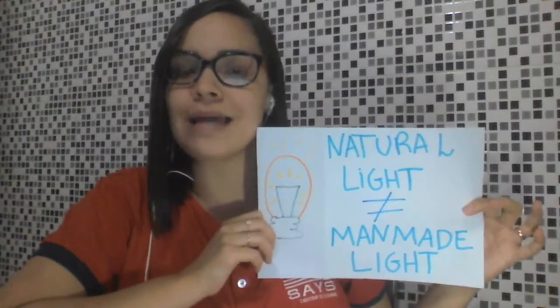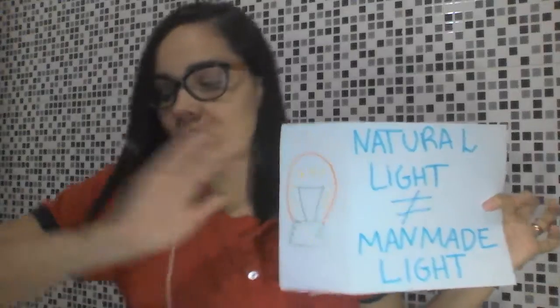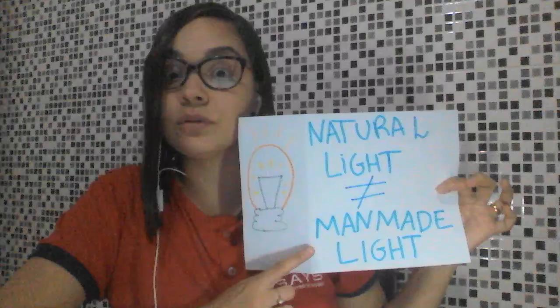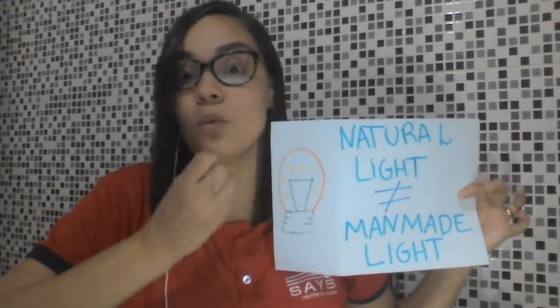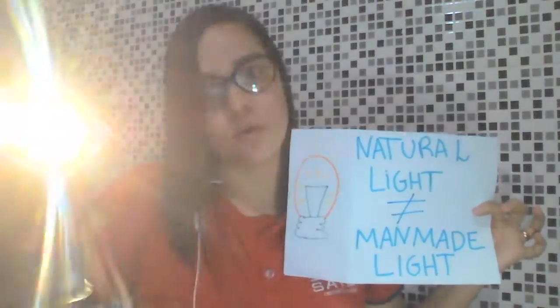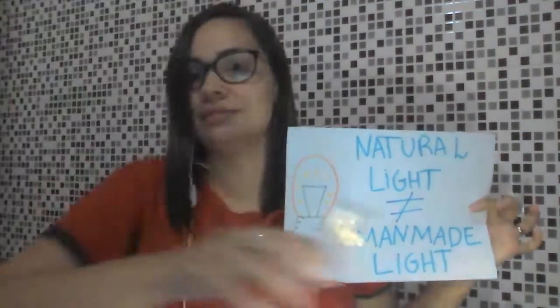Bom dia, família! Boa tarde! Boa noite! Tudo certo com vocês? Na nossa aula de hoje, nós aprendemos sobre light — luz. Natural light, que é a luz natural, que vem da natureza. Dei como exemplo a luz do sol. Man-made light é o tipo de luz que é criado pelo homem. Dei o exemplo da minha lantern. Foi o homem que criou. Ela não é natural, ela não vem da natureza. Correto?